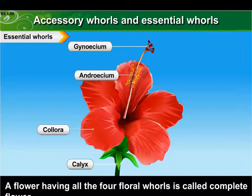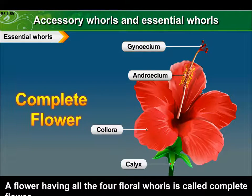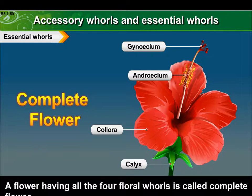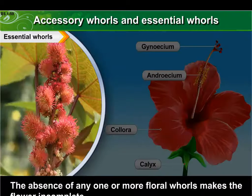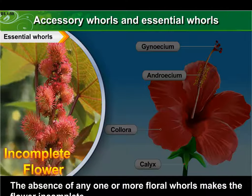A flower having all four floral whorls is called a complete flower. The absence of any one or more floral whorls makes the flower incomplete.